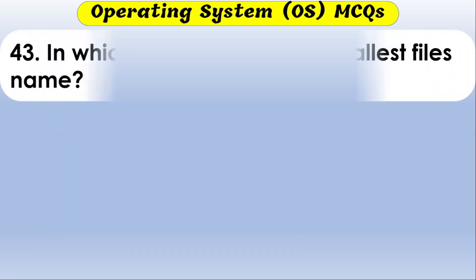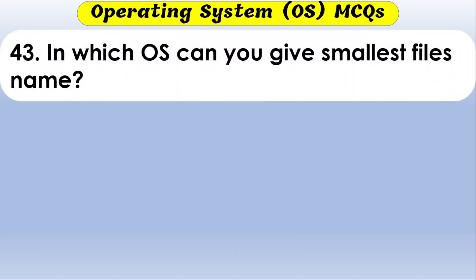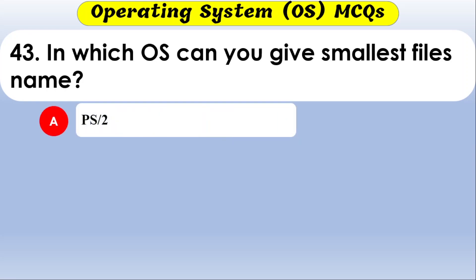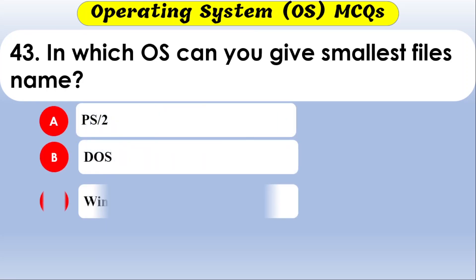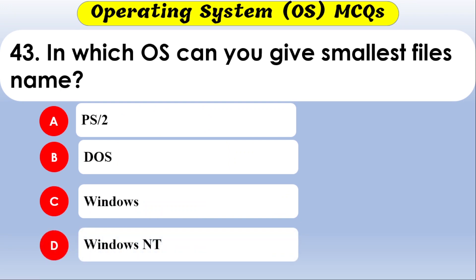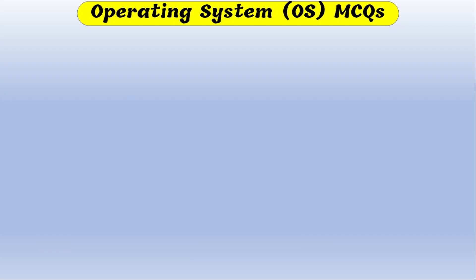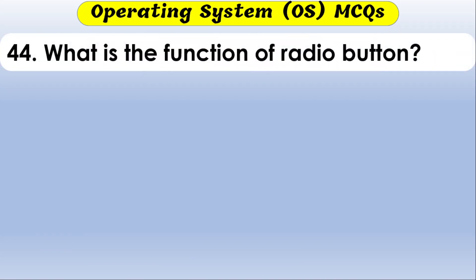Which of the following is a drop-down list? The options are combo list, text, and anonymous. The correct option is combo list. Which operating system supports the smallest file names? The correct option is DOS.